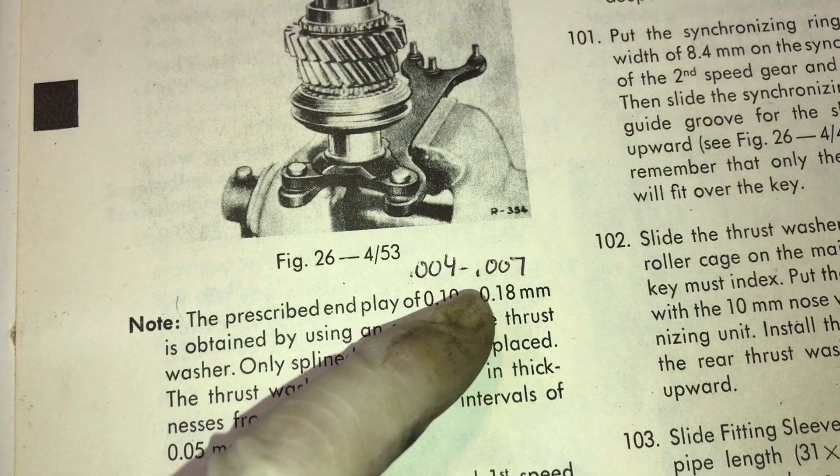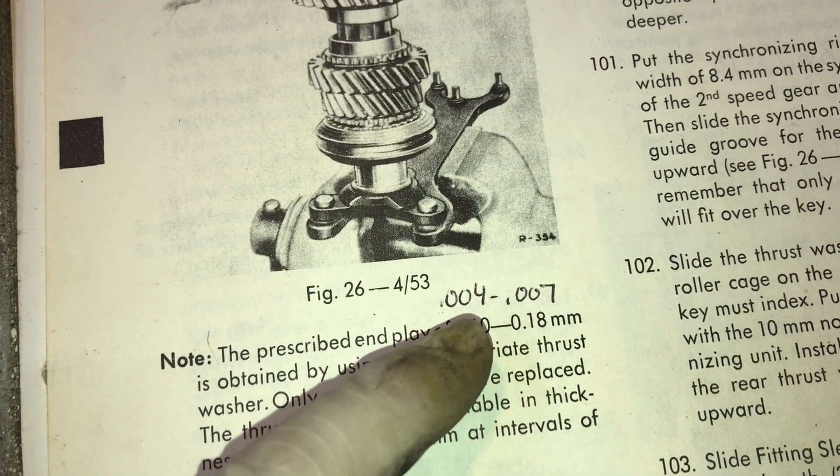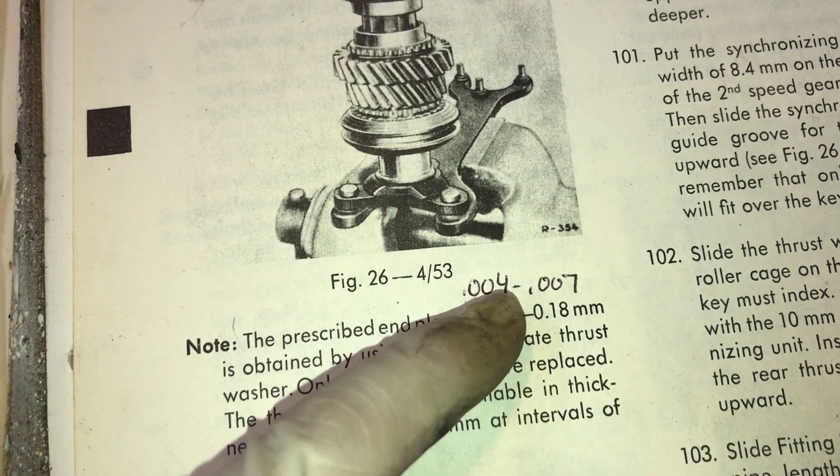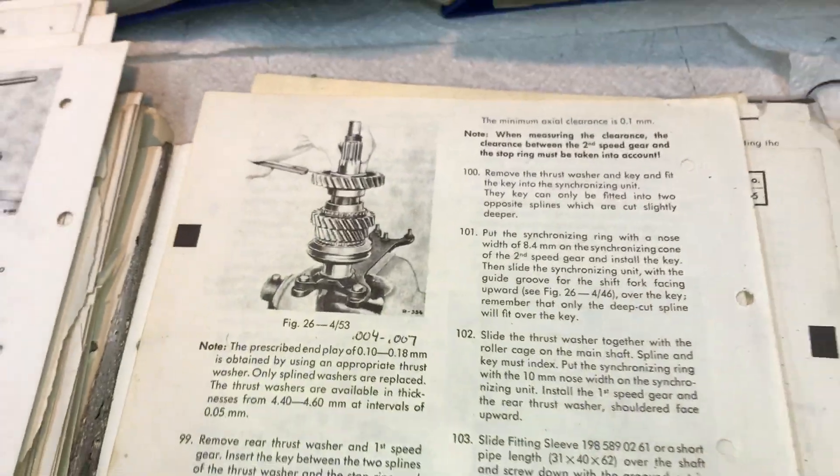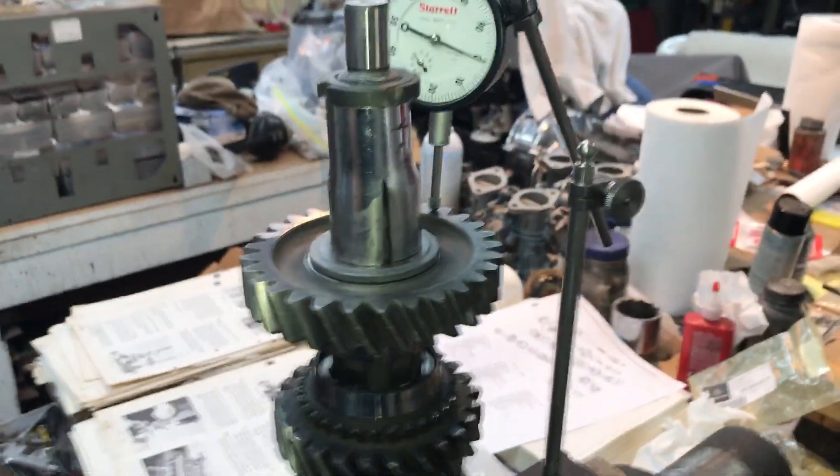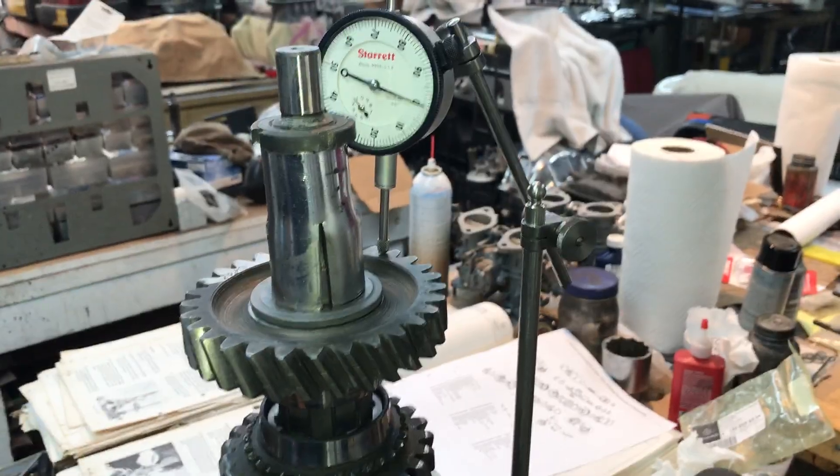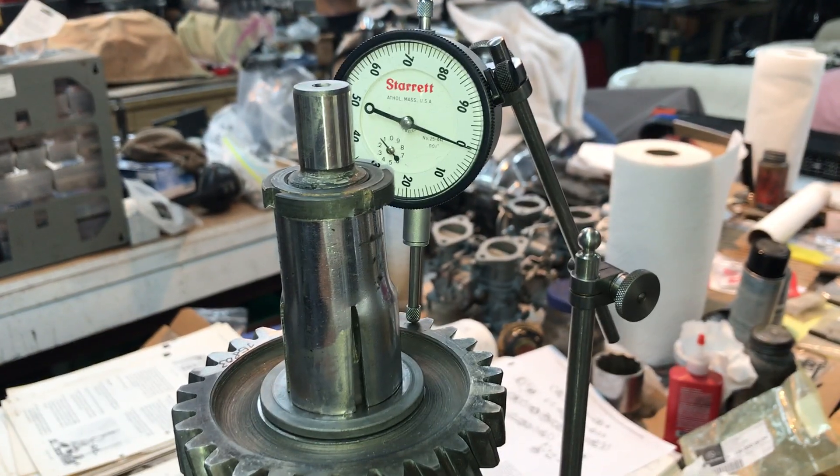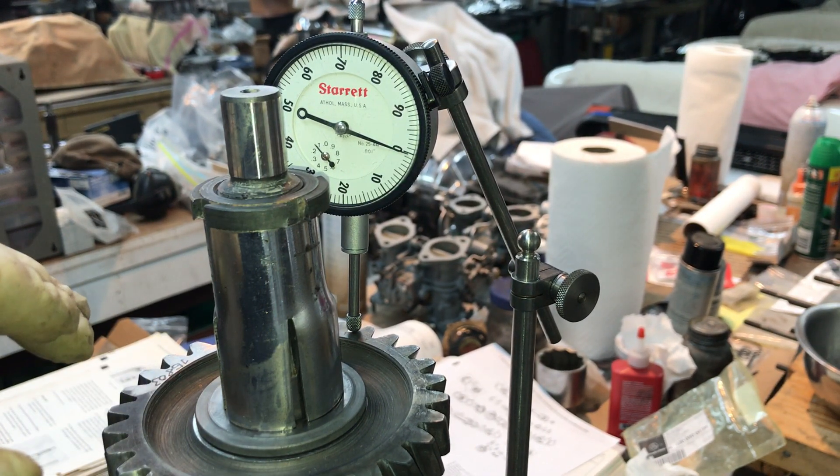Prescribed clearances are four thousandths to seven thousandths. A typical human hair is two thousandths thick, so you've got a clearance of three thousandths. The thickness of two and a half human hairs is your tolerance. That gives you an idea how precise Mercedes transmissions are. To achieve those different thicknesses and tolerances, you have a variety of washers and parts here to make that happen.